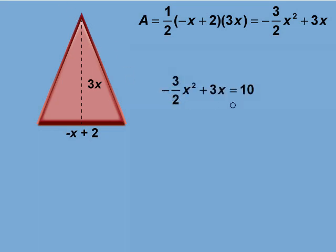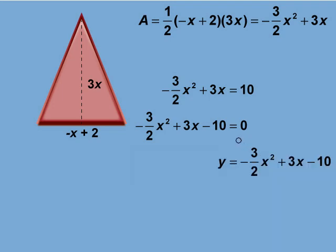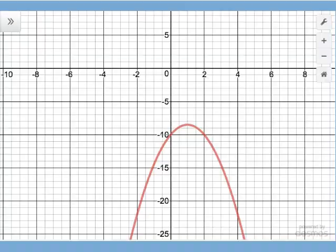So we end up with this quadratic equation. This is the equation in standard form. Let's take a look at the graph of this function to see if it intersects the x-axis. Here is the graph. As you can see, the parabola doesn't intersect the x-axis. So there is no solution to this quadratic equation. So this triangle cannot have an area of 10.